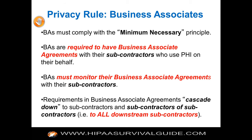Requirements in business associate agreements cascade down to subcontractors recursively. What that means is if a covered entity limits what a business associate can do with PHI, the business associate — if it's going to outsource some of that to a contractor — also has to apply that limitation, and always has to be consistent with and share PHI according to the minimum necessary principle.